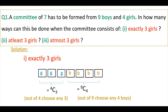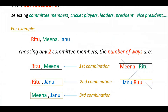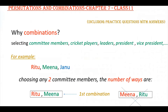Before going to do this problem, I am going to explain how to do these types of problems with a small example. In this problem, we have to find the combinations. Why? Because if you see problems selecting committee members, cricket players, leaders, president, vice president, etc. — these type of problems, you have to find combinations only.